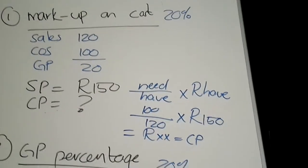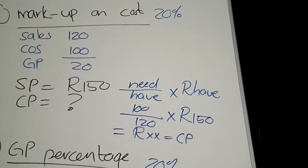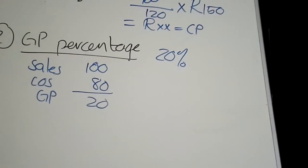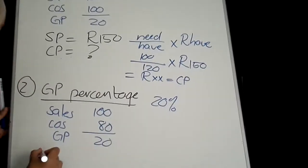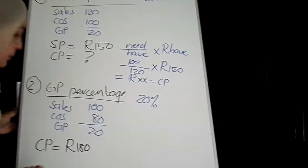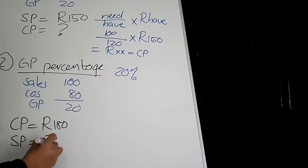That cost price you will then transfer into your journal entries, which would normally be required of you. For the gross profit percentage, you do exactly the same thing. If the question said cost price equals R180, the gross profit percentage is 20%, and you now need to calculate selling price.